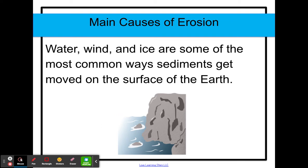Some of the main causes of erosion are water, wind, and ice, and these are the most common ways to get sediments moved on the surface of the earth.